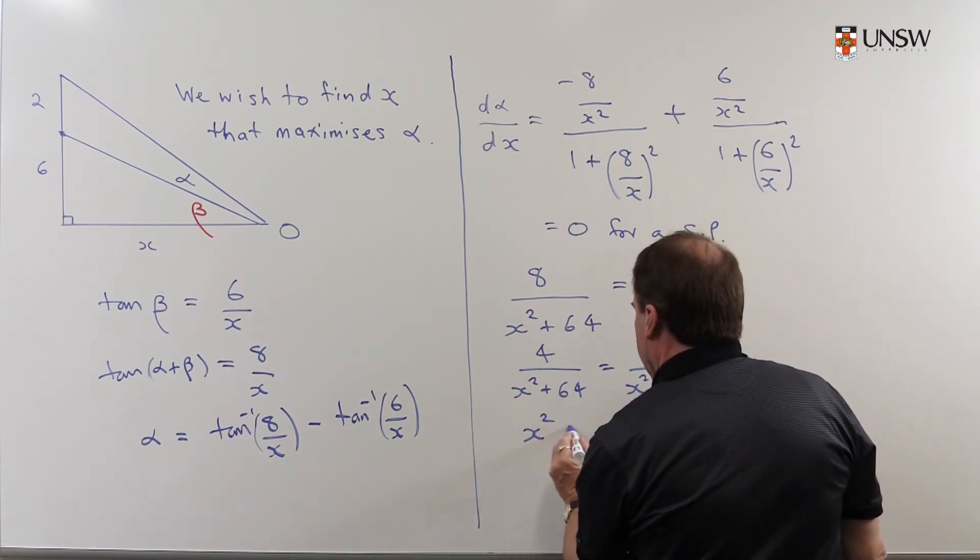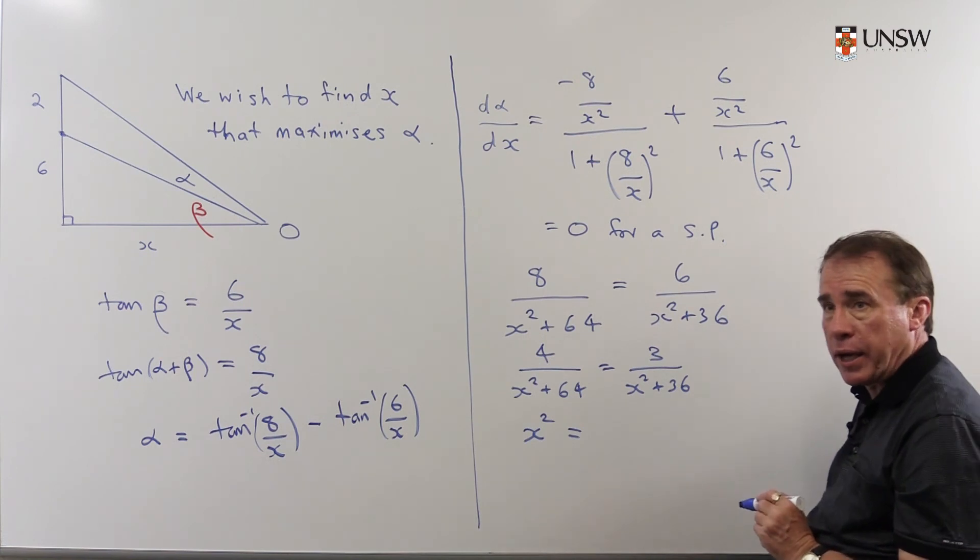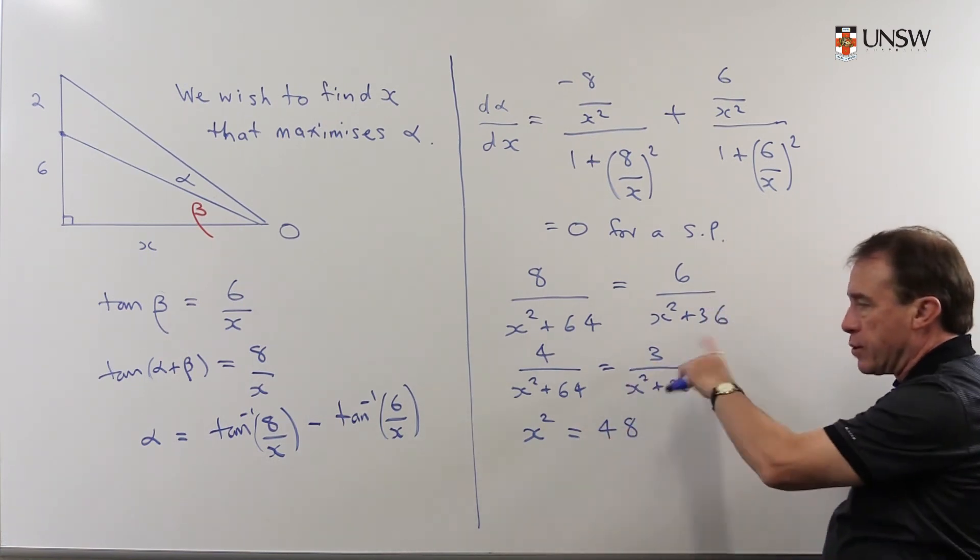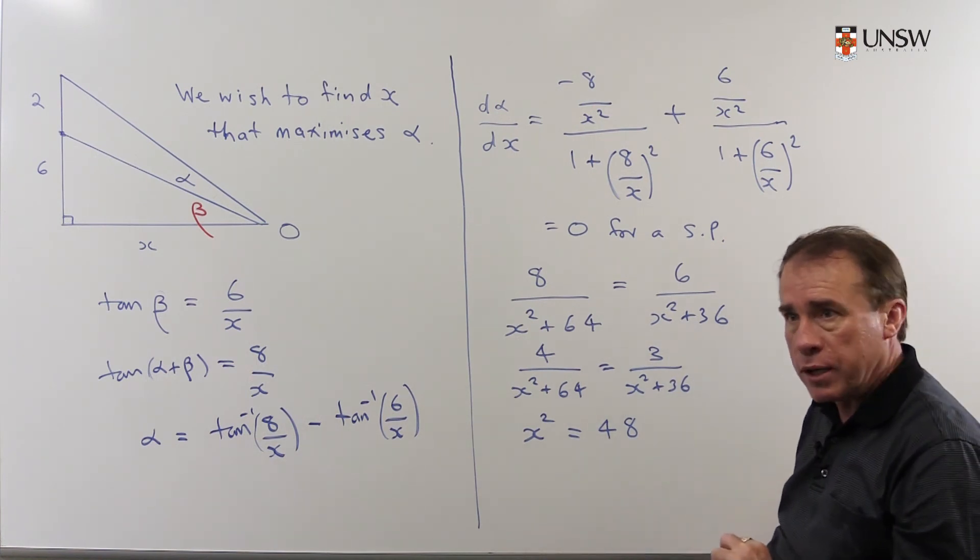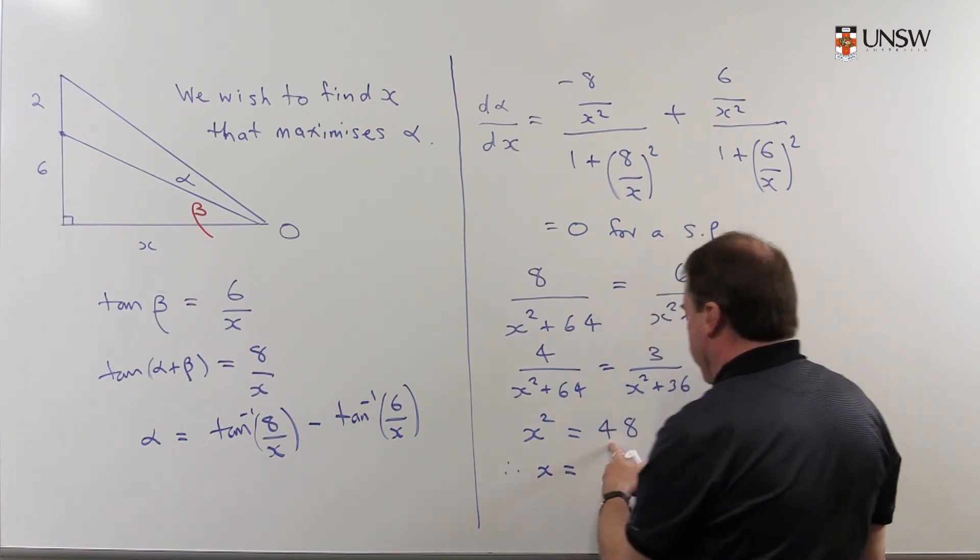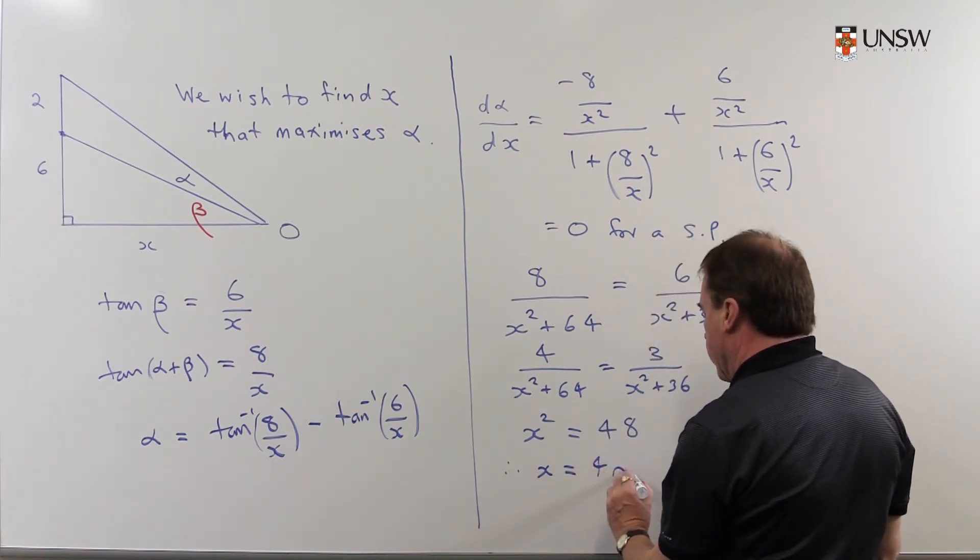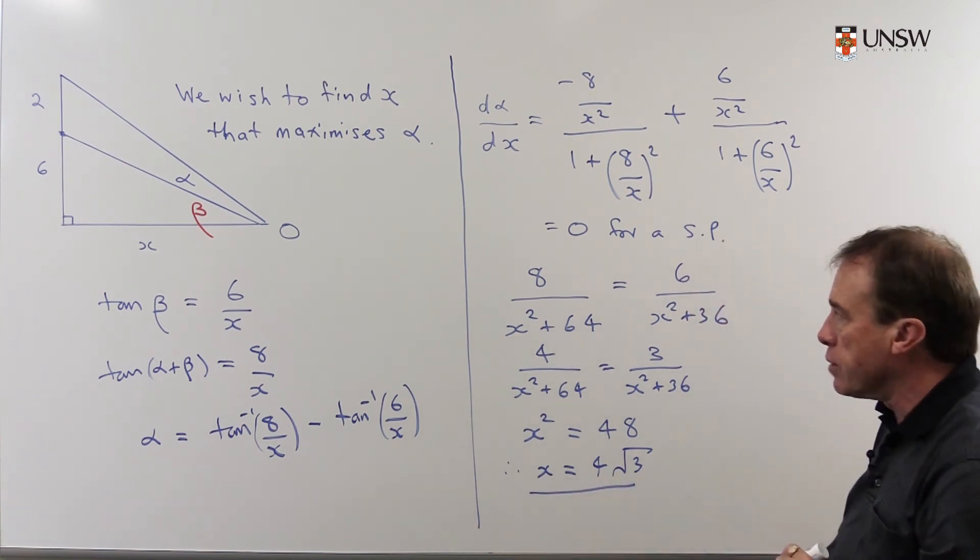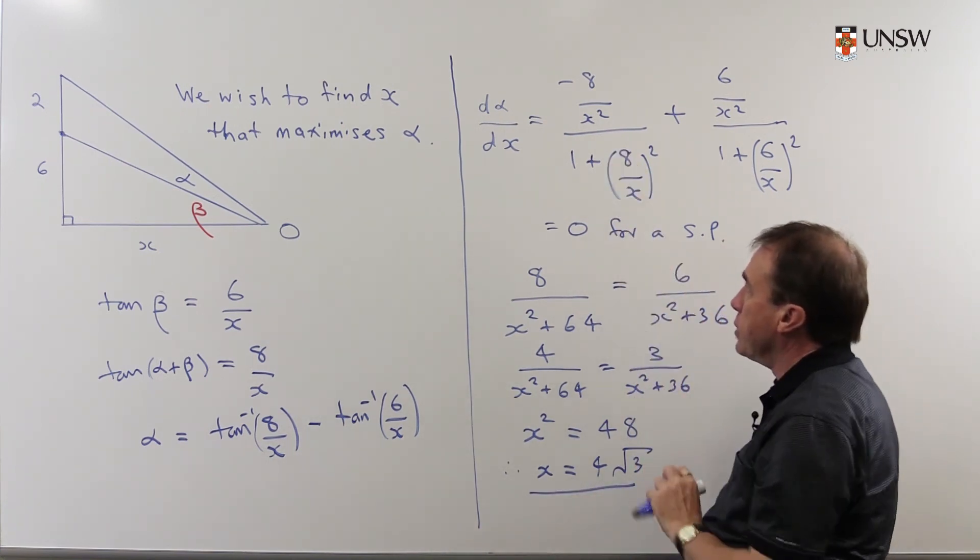I'll leave you to check the arithmetic here. I get X² = 48 after you've cross multiplied and rearranged a little bit, and so that means X is the square root of 48, which is 4√3. So that value 4√3 will make the derivative equal to 0.